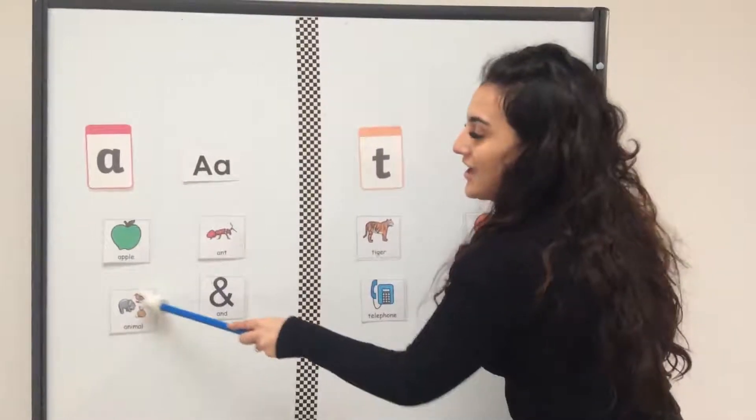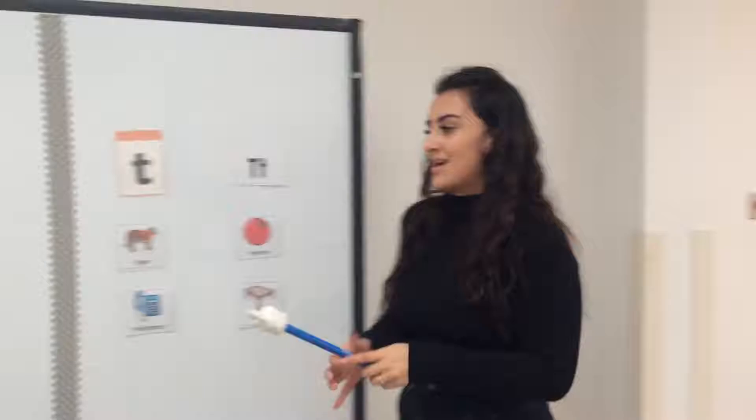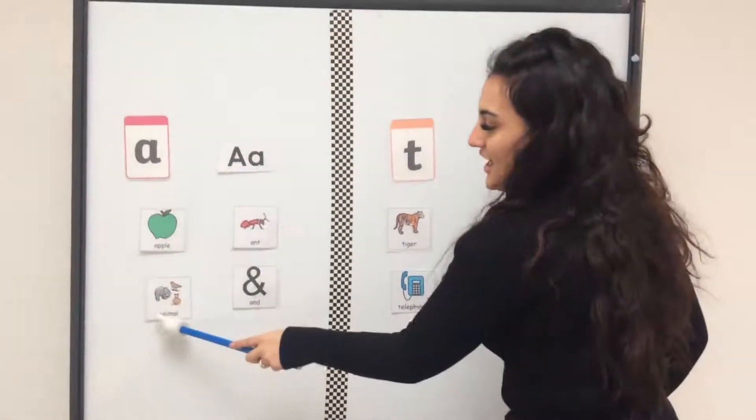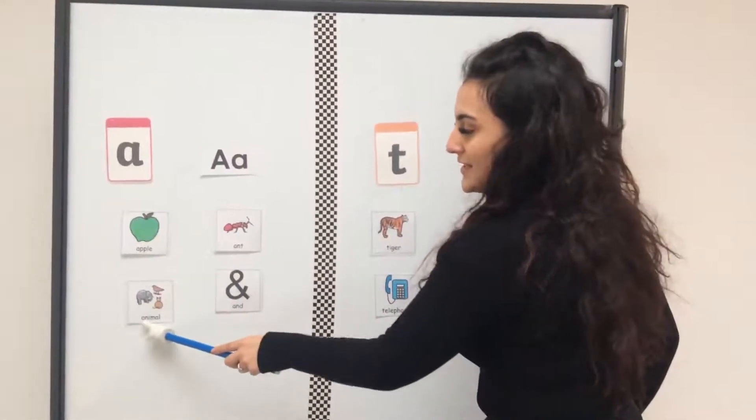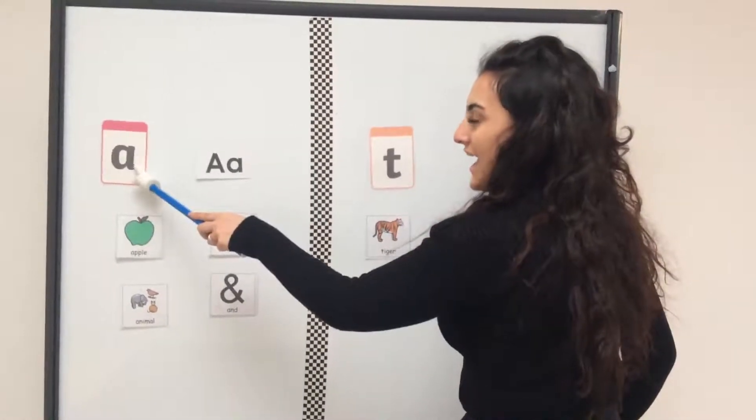Over here I've got A for animal. I've got the picture and the word for animal. Animal begins with the letter A.